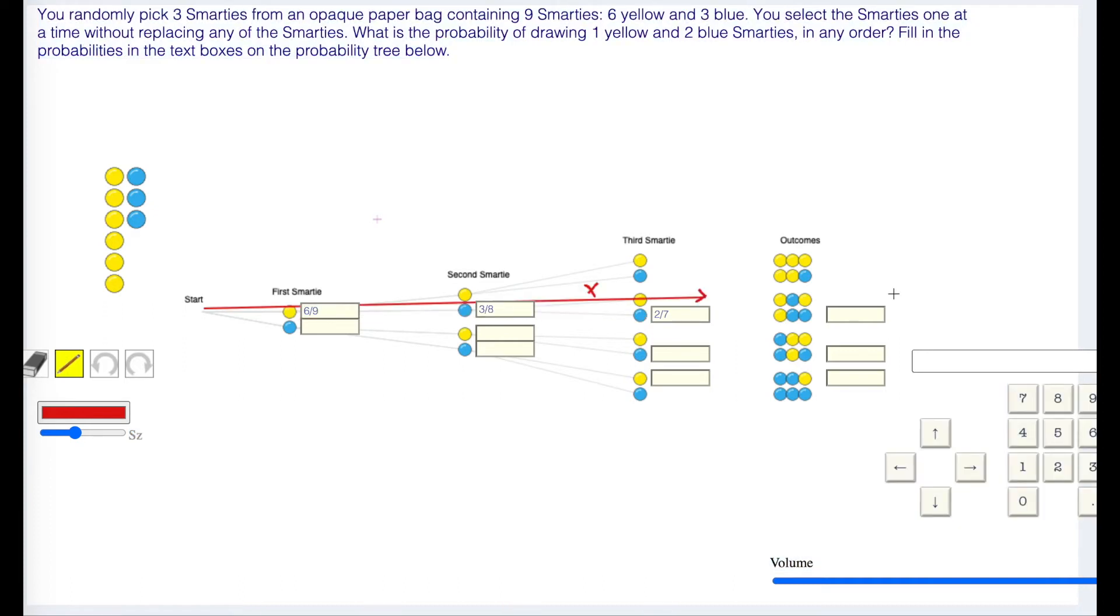Then when you want to figure out the total probabilities, when we go this way, we add. Add the probabilities, and we go down this way. We have 6/9 times 3/8 times 2/7. Six out of nine times three out of eight times two out of seven.